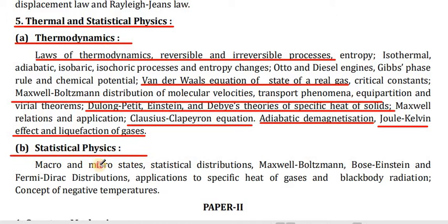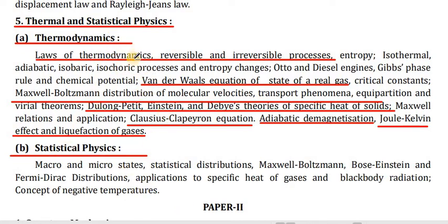Section B — Statistical Physics: micro, macro and micro states, statistical distributions — Maxwell-Boltzmann, Bose-Einstein, and Fermi-Dirac distributions, applications to specific heat of gases and blackbody radiation, concept of negative temperatures. These are the important topics of Paper 1, Physics.